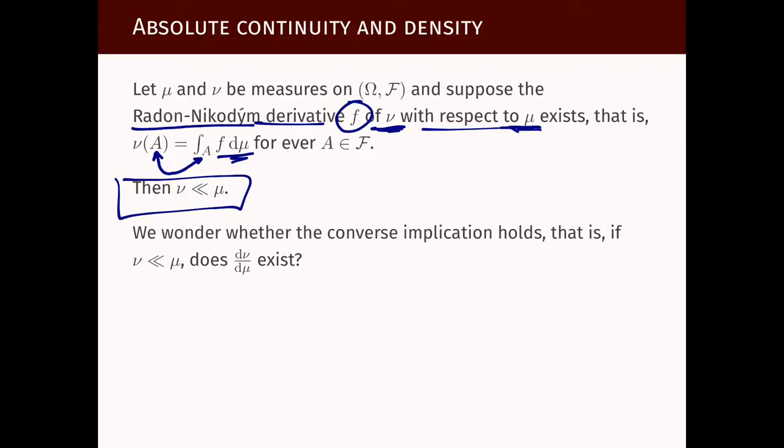Why is that? If μ(A) = 0, this implies that the integral of any function on A is also zero, because ν(A) = ∫_A f dμ = ∫_Ω f·1_A dμ. The function f·1_A equals zero almost everywhere, so the integral is zero.